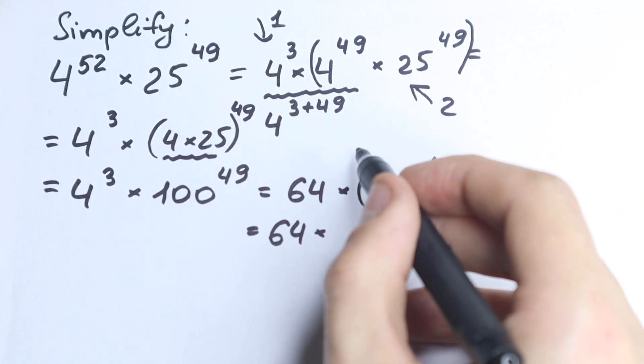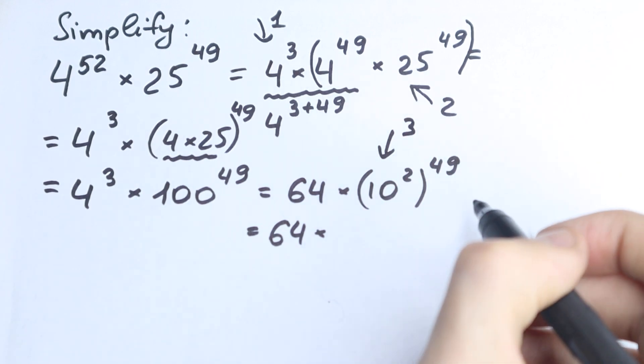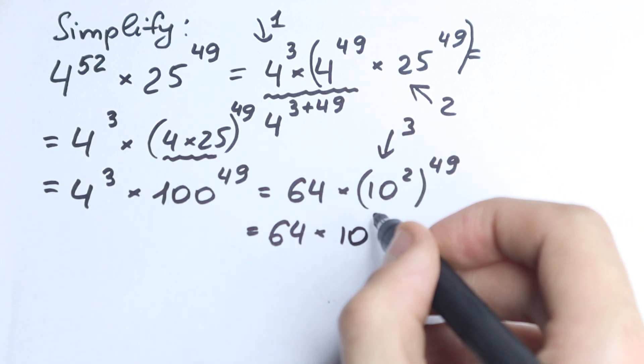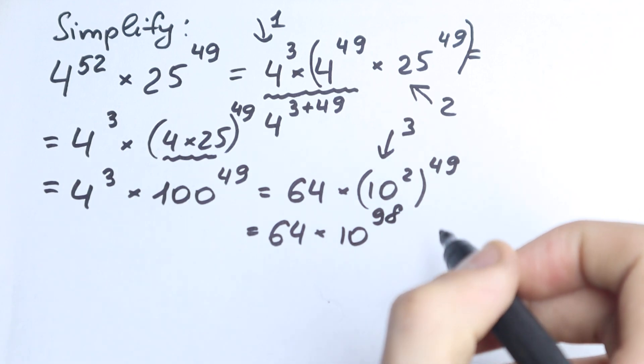This is like another property, this is the third step right here. So 2 times 49 equals 98. We have 10 to the power 98. And this is our answer.